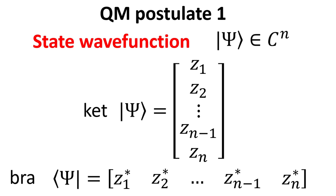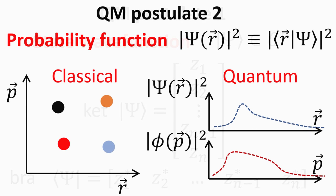The state vector contains all the information about the particle, and how we extract this information is described in subsequent postulates. In classical mechanics, the position and momentum of the particles are all we need to determine the future and past configuration of the system. Hence, classical mechanics is a deterministic theory. Quantum mechanics, on the other hand, is probabilistic in nature.